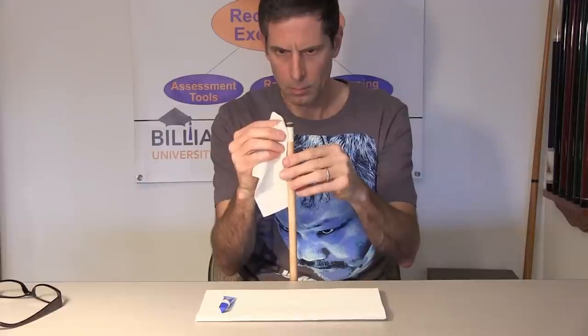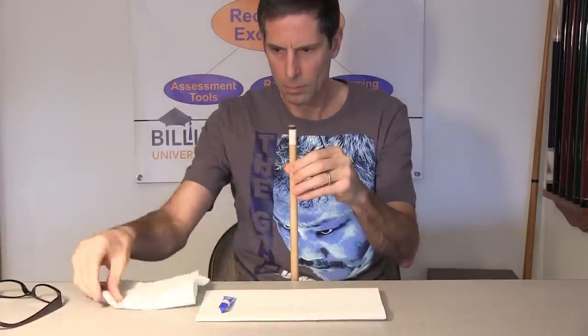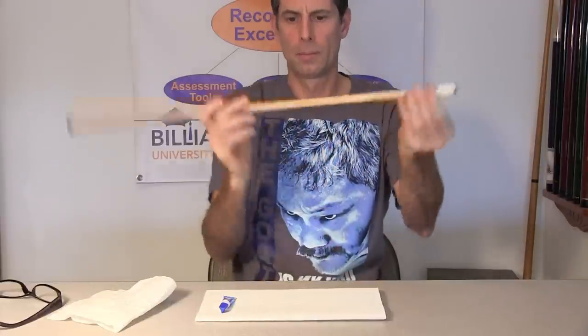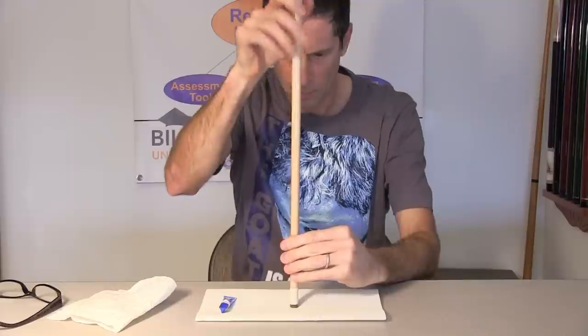Gently wipe off excess glue with a paper towel while turning the shaft. This also helps make sure the tip is centered. Now firmly apply and keep pressure on the tip. You can do this by hand by pushing the shaft down onto the table.